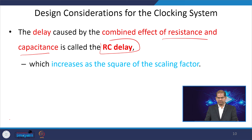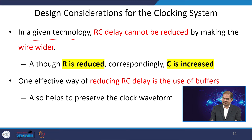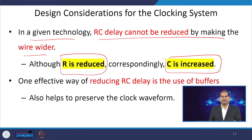This leads to RC delay, which increases as the square of the scaling factor. If you go from one technology node to another, you have a certain scaling factor, and your interconnect delay will increase by the square of that. In a given technology node, RC delay cannot be reduced by making the wire wider. If you increase the wire width, resistance R will reduce, but capacitance C will increase, so making interconnects wider is not an effective approach.